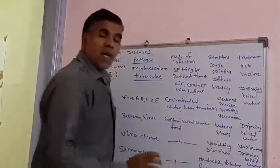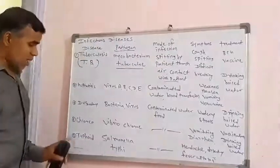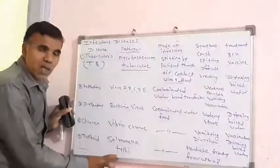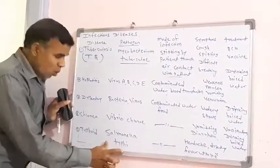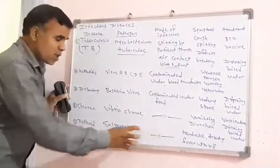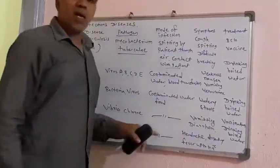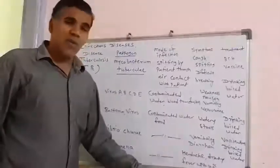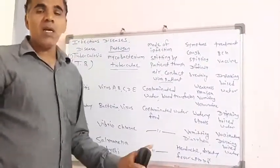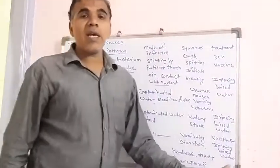Number five: Typhoid. The name of the pathogen is Salmonella typhi. Salmonella typhi is the pathogen causing Typhoid disease. The mode of infection is contaminated water and food. Symptoms include headache, dysentery, and fever up to 104 degrees Celsius. The treatment is vaccination and always using boiled drinking water.